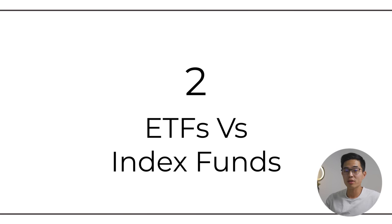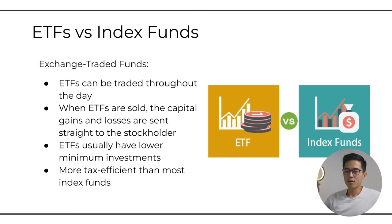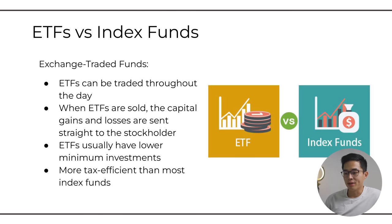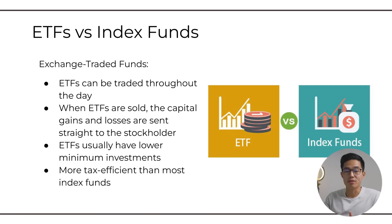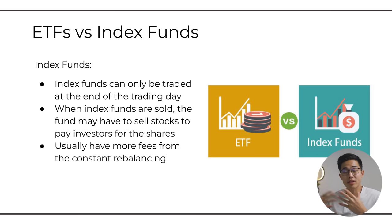Now let's talk about a very common question: what is the difference between an ETF and an index fund? ETFs can be traded throughout the day, and when ETFs are sold, the capital gains and losses are actually sent straight to the stockholder. ETFs also usually have lower minimum investments, so you can get started with as low as a few dollars, and they are also going to be more tax efficient than most index funds. Index funds can only be traded at the end of the trading day because index funds are only traded once per day, making them a little bit less liquid than holding ETFs.